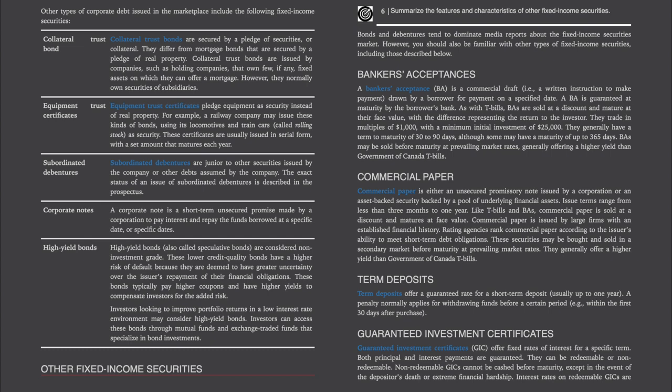Other Fixed Income Securities: Banker's acceptances (BAs) — a BA is a commercial draft (a written instruction to make payment) drawn by a borrower for payment on a specified date, guaranteed at maturity by the borrower's bank. Like T-bills, BAs are sold at a discount and mature at face value, with the difference representing the return to the investor. They trade in multiples of $1,000 with a minimum initial investment of $25,000, generally have a term to maturity of 30 to 90 days (though up to 365 days), and generally offer a higher yield than Government of Canada T-bills.